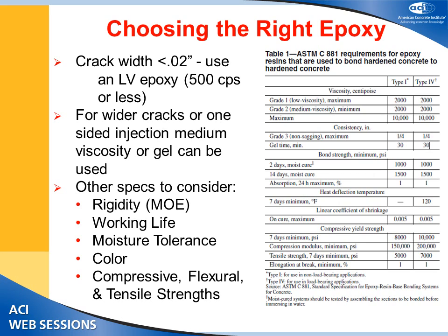There is an ASTM C-8081 specification that governs the use of epoxies for different repair applications. That document classifies epoxy resins based on different properties including strength, modulus of elasticity, working time, viscosity, and a host of other parameters.